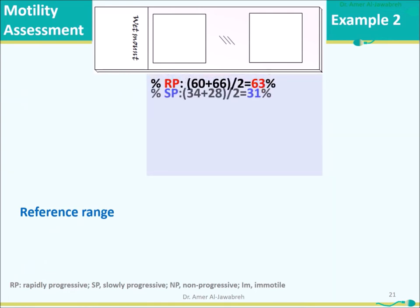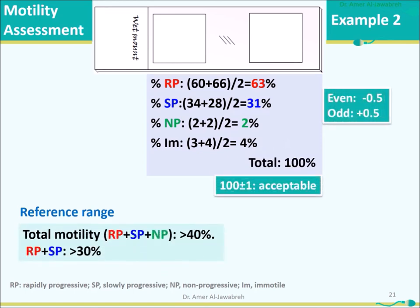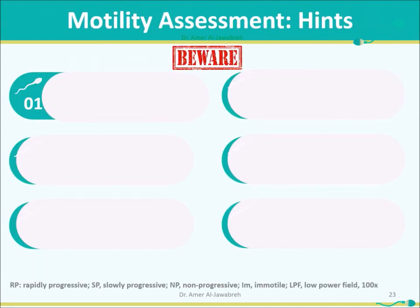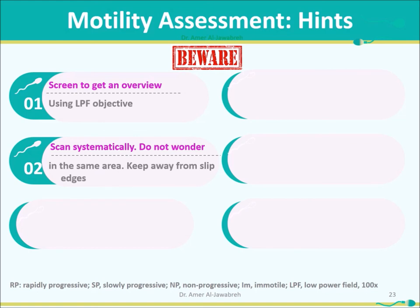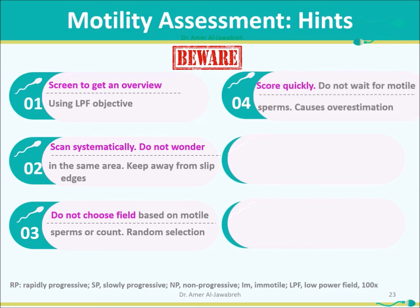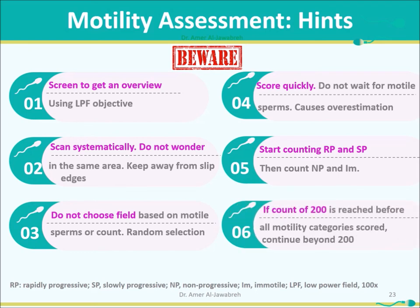Finally, take the average of the percentages from replicate counts. Reference ranges: total motility (RP + SP + NP) should exceed 40%; RP + SP should exceed 30%; aggregation and agglutination should be absent. A table shows allowable differences for a given average. When screening: use LPF objective for an overview, scan systematically, do not revisit the same area, keep away from slip edges, avoid choosing fields based on motile sperms. Score quickly — do not wait for motile sperms, as this causes overestimation. Start counting RP and SP, then count NP and immotile. If 200 is reached before all motility categories are scored, continue beyond 200.